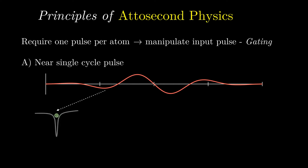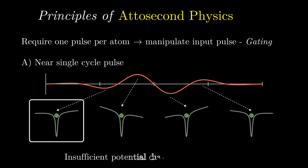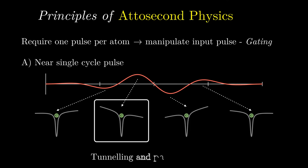Firstly, we can use a single cycle femtosecond pulse, which will then correspond to one attosecond pulse being released, since the external electric field is not strong enough to allow for tunneling apart from that one cycle.